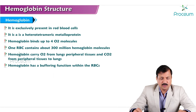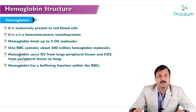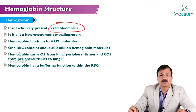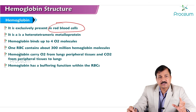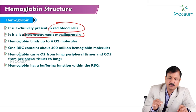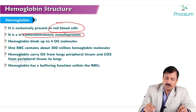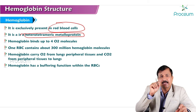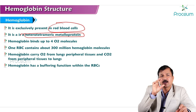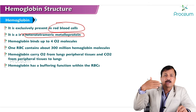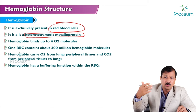Hemoglobin is exclusively present in red blood cells. No other tissues or cells in our body contain hemoglobin. Hemoglobin is a heterotetrameric metalloprotein — that means hemoglobin has four subunits and these four subunits are of different types. Each subunit contains a heme group and that heme group has a ferrous iron (Fe²⁺) within it, which is why it is called a heterotetrameric metalloprotein.